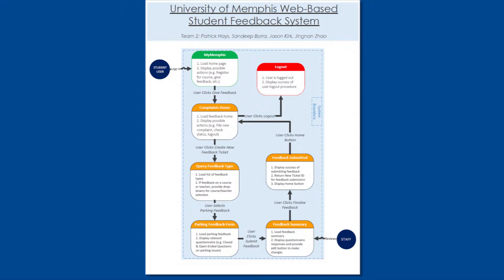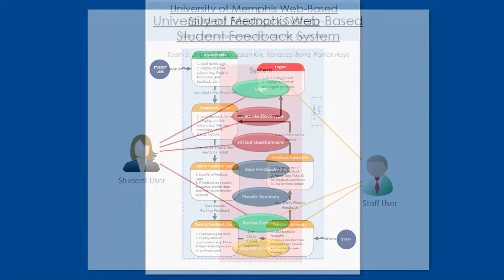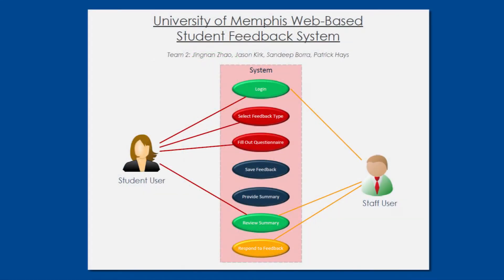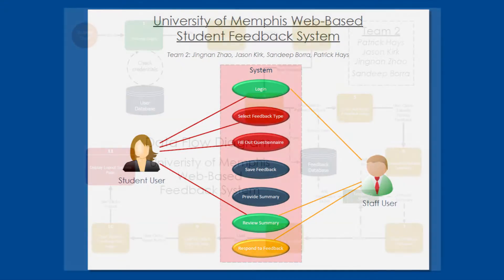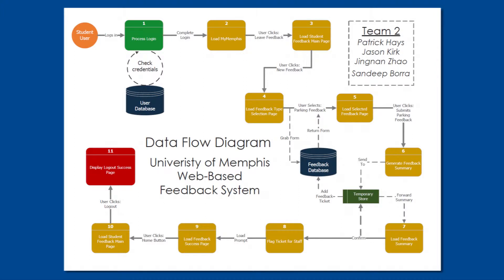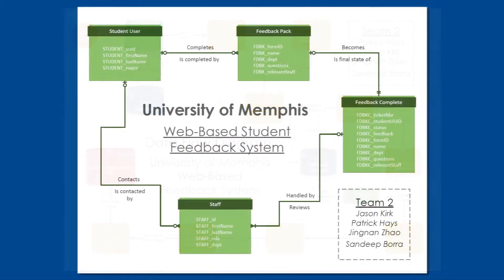To further develop the requirements determined in the planning and initiation stages, our group created a use case diagram which forms the foundation of our system. A data flow diagram was then created to help us further visualize and plan the flow of information through our proposed system, detailing the inputs and outputs and how information will be stored. An entity relationship diagram was then created to give us a top-down view of all entities, attributes, and relationships required in the proposed system.